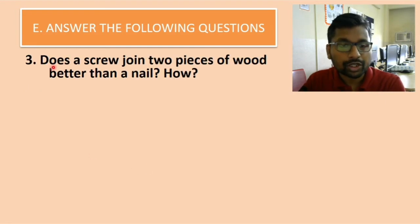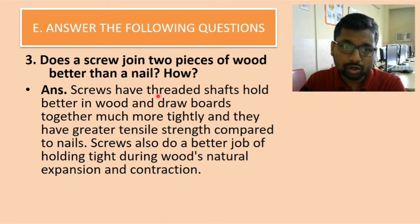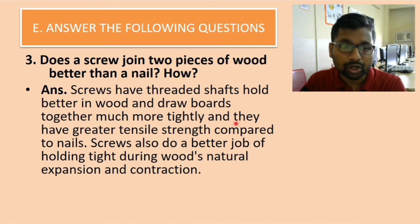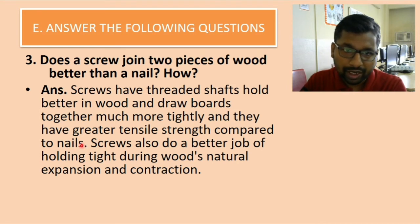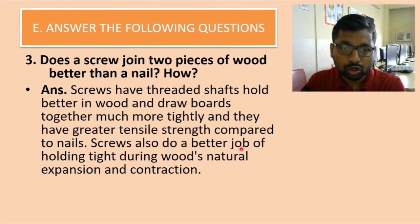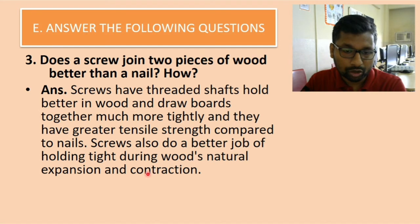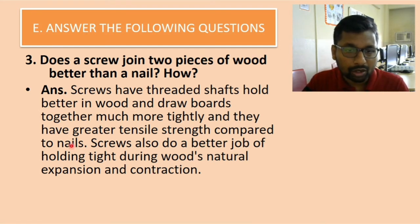Third question: does a screw join two pieces of wood better than a nail? Screws have threaded shafts that hold better in wood and draw both pieces together much more tightly, and they have greater tensile strength compared to nails. Screws also do a better job of holding tight during wood's natural expansion or contraction, because depending upon temperature and condition, wood naturally expands and contracts, and a screw holds onto it very nicely compared to a nail.